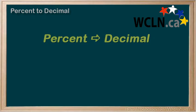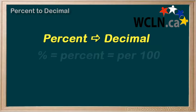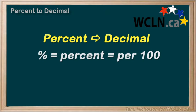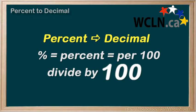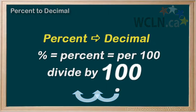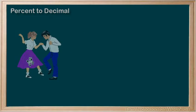Change a percent to a decimal — you can do it, it's definitely doable. To change a percent to a decimal, remember: percent means per 100. You just divide the percent by 100. This is the same as moving the decimal point two spaces to the left. I call this the decimal dance — move two to the left.